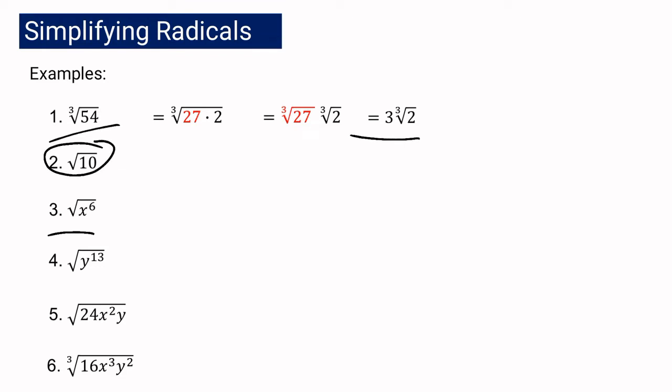Now let us proceed with example number 3. We have here the square root of x to the 6th. If we write this as a rational exponent, then we will have x raised to 6 over 2. If we simplify this, it will become x cubed. So in simplest form, the square root of x to the 6th is actually x cubed.